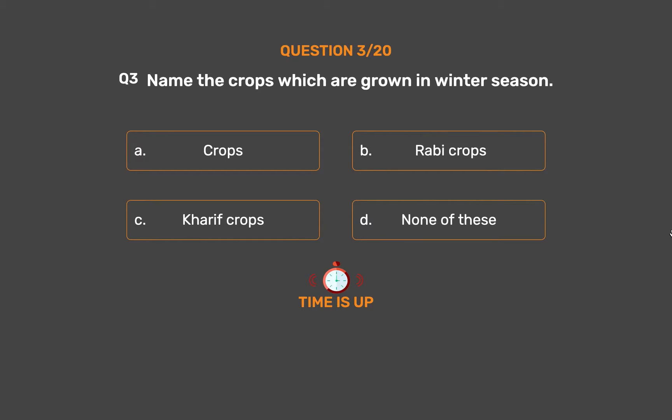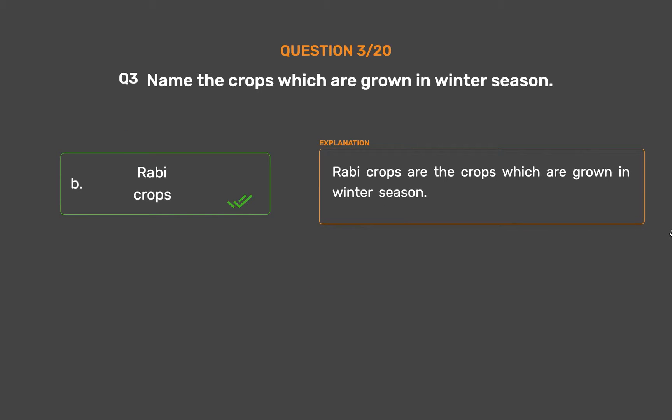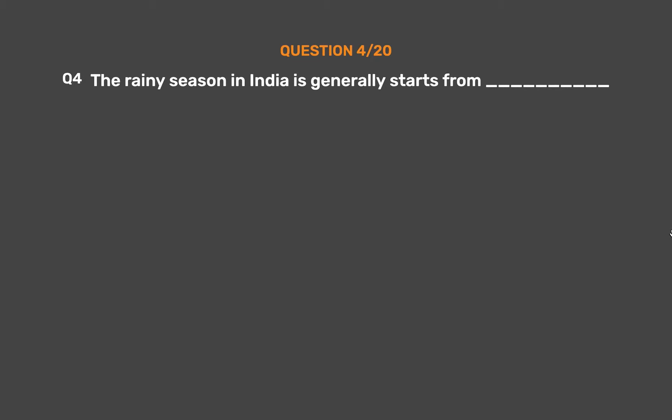The correct answer is Option B: Rabi crops. Rabi crops are the crops which are grown in the winter season.